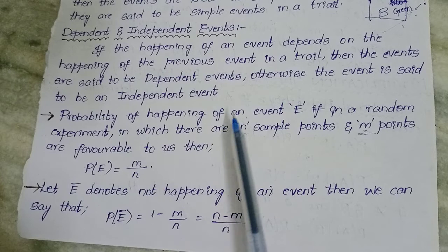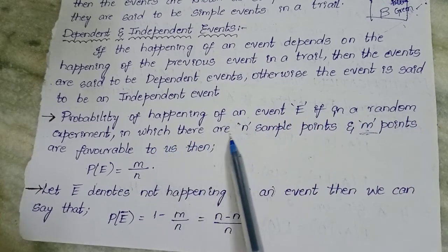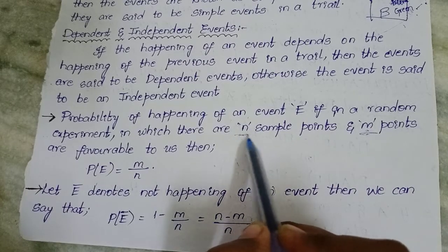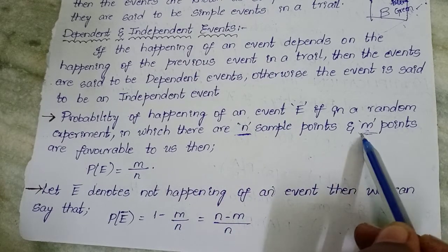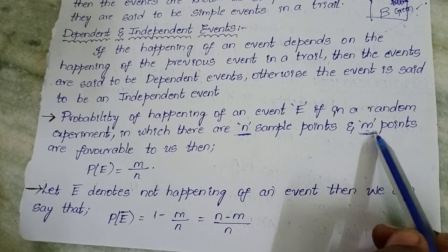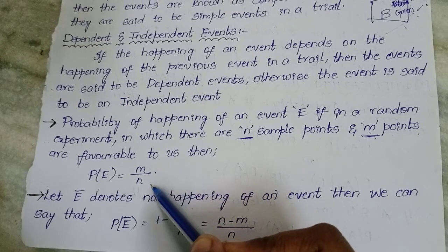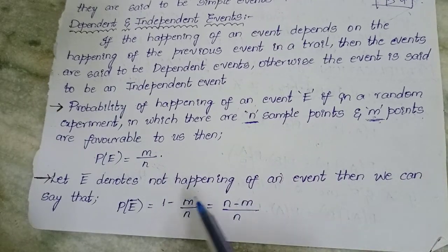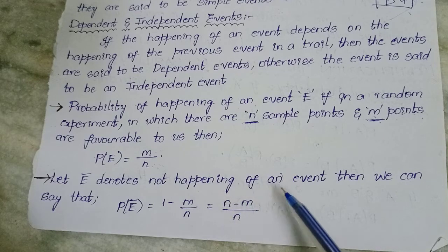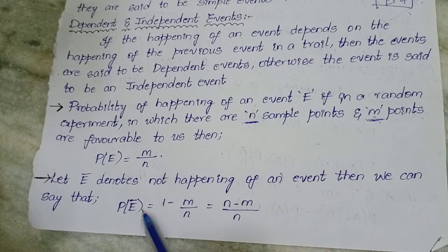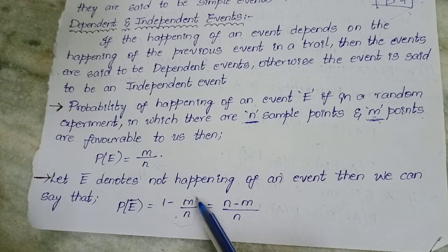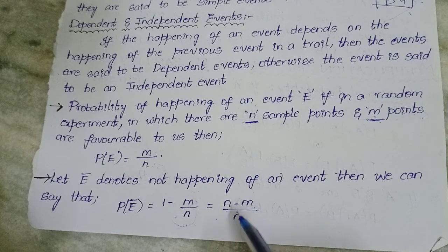Probability of happening of an event E in a random experiment in which there are N sample points — meaning N outcomes are there — and M favorable outcomes. Then the probability of happening of that event is number of favorable outcomes by total number of outcomes, that is M by N. Let E-bar denote the not happening of an event. Then P(Ē) = 1 − P(E) = 1 − M/N = (N − M)/N.